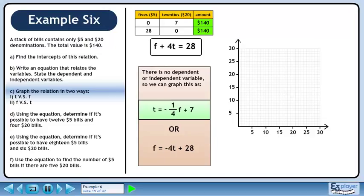We'll start by graphing t equals minus 1 over 4f plus 7. Label the x-axis f. Label the y-axis t.